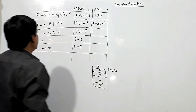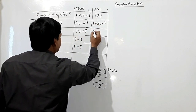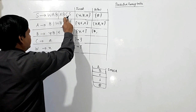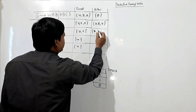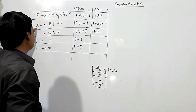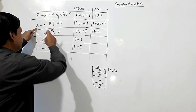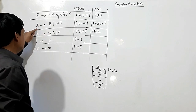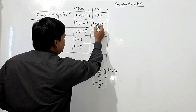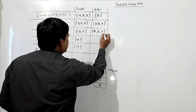Follow of B: using S produces WAB, B is the rightmost, so follow of B is same as follow of S, giving dollar. Using S produces ABCS, follow of B is same as first of C, which is Z. Using A produces WB, B is the rightmost non-terminal produced by A, so follow of B is same as follow of A, giving {Y, Z, dollar}. So follow of B is {Y, Z, dollar}.